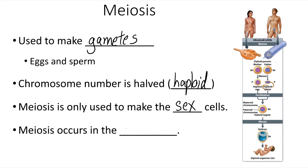Meiosis only occurs in the gonads. That's the only structure in humans where meiosis occurs.